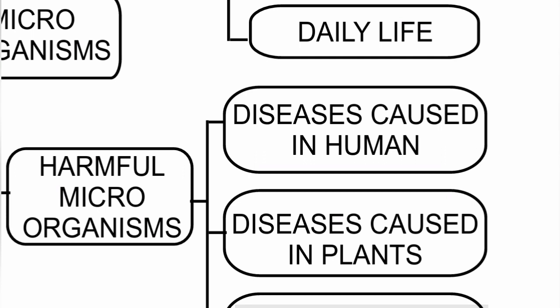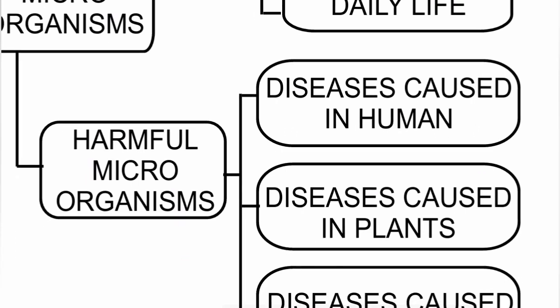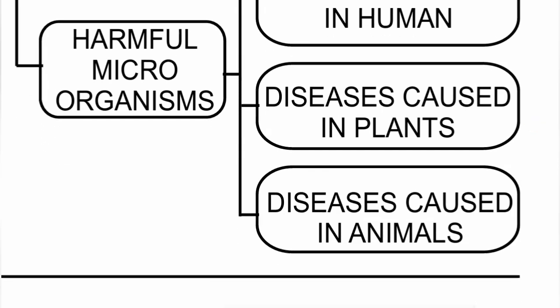Harmful microorganisms cause diseases in plants, such as citrus canker and potato blight disease. Disease caused in animals include anthrax and foot and mouth disease. These are the key harmful effects of microorganisms.